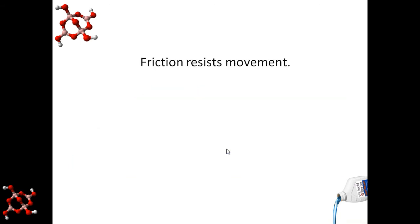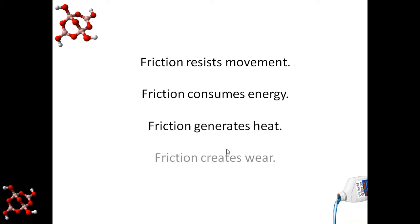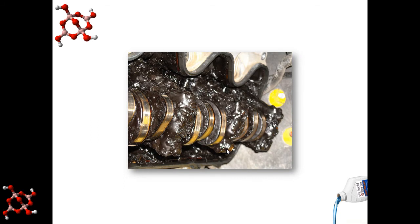Friction resists movement, consumes energy, generates heat, and creates wear. Heat and wear from friction cause oxidation, creating varnish and sludge. Varnish and sludge compound the problem of friction and heat.